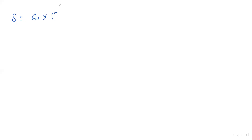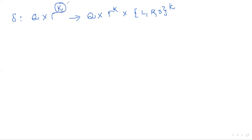We know already the transition function — the 7-tuple representation. The only difference in the transition function for a multi-tape machine is k: k represents the number of tapes. The transition reads k symbols and produces k symbols and k directions (left, right, or stay). Everything else is the same as in the single-tape version.